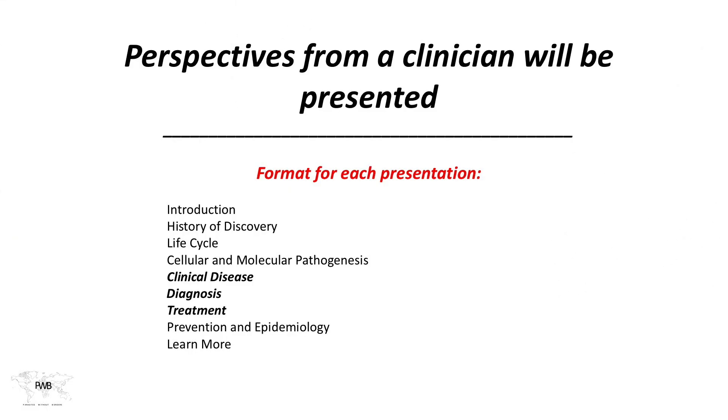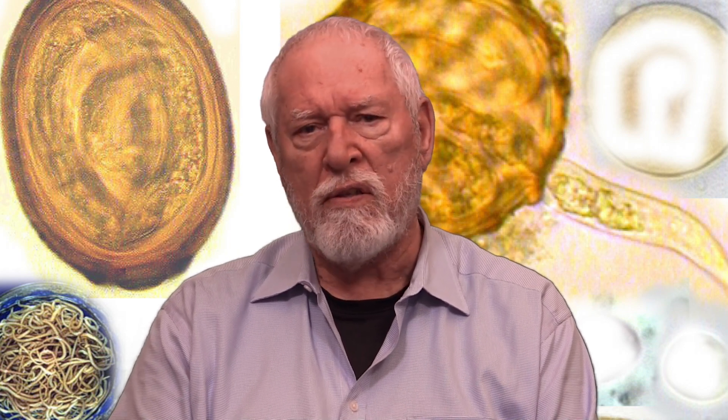Now you're going to be getting the perspectives of a clinician. A clinical vignette will be presented discussing clinical disease, diagnosis, and treatment. As we go through what you've learned from the introduction — the life cycle, the cellular and molecular pathogenesis — that should inform you and give you a chance to think about why we're seeing this particular clinical disease, why we're seeing this manifestation, and then how we're going to approach diagnosis and treatment. What do we do once we've seen the disease and made the diagnosis? How do we make our patients better? We'll be returning to those subjects as individual parasites are discussed throughout this exciting new section on helminths.